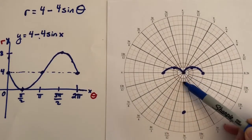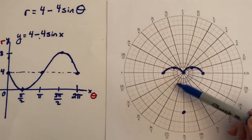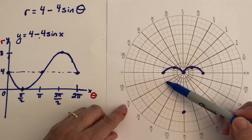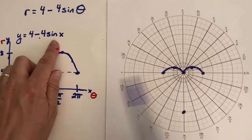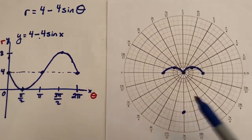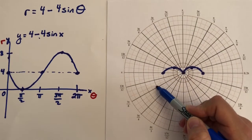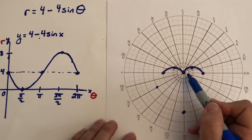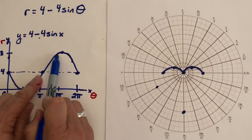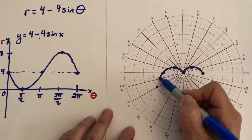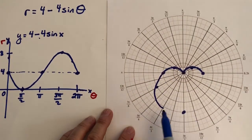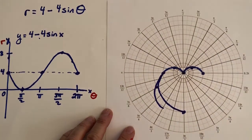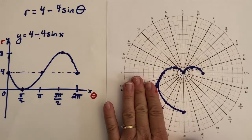To plot a helpful intermediate point, at 7π over 6: sine of 7π over 6 is negative one half, times negative 4 is 2, plus 4 is 6. So at 7π over 6, r = 6, which gives me an idea of how wide the graph should be as r is getting bigger and bigger up to 8.